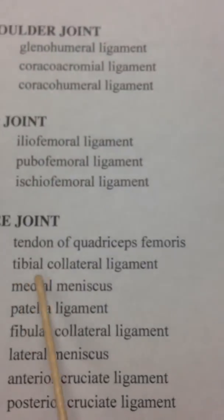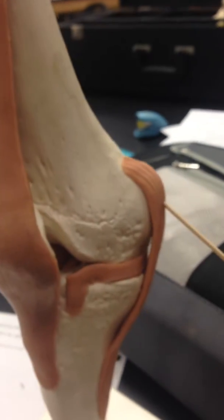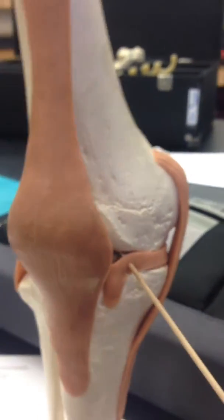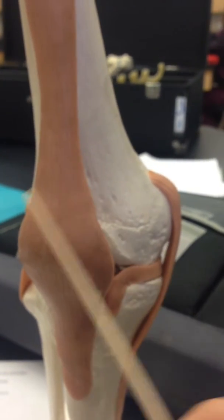We're gonna find the tibial collateral ligament. It's gonna be right here on the side. And then we have the medial meniscus, right here, right beside, between these two, right there.